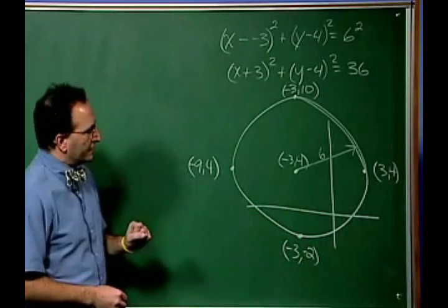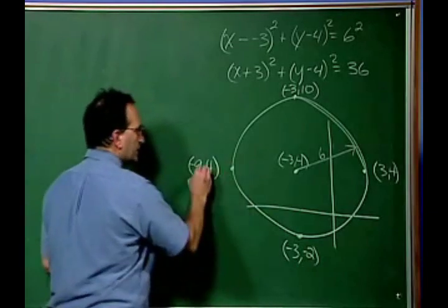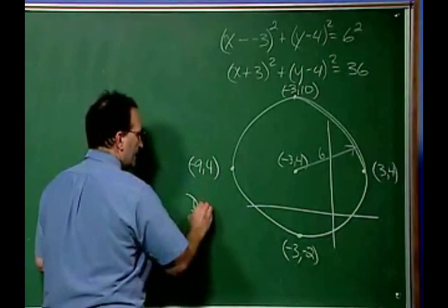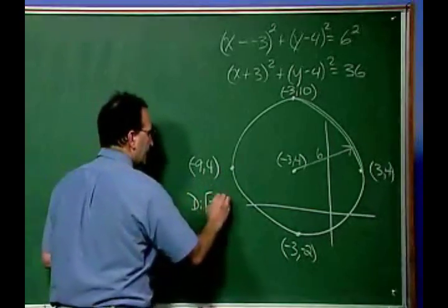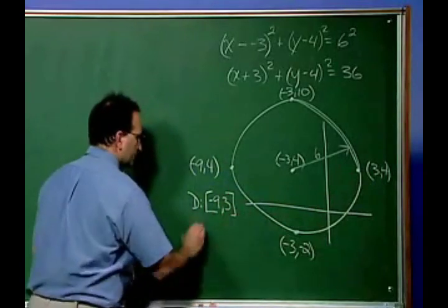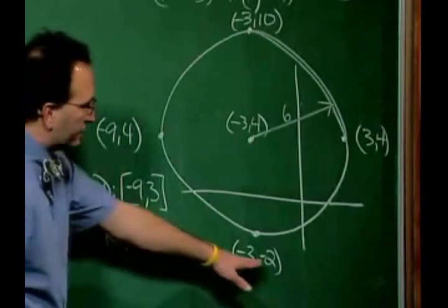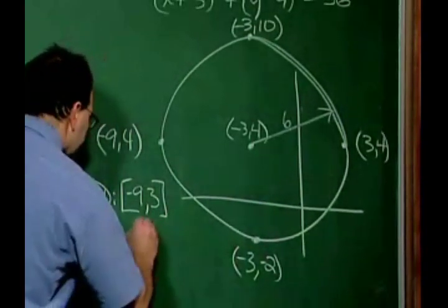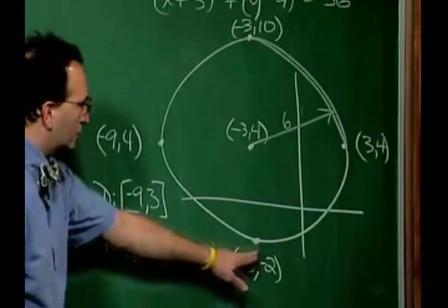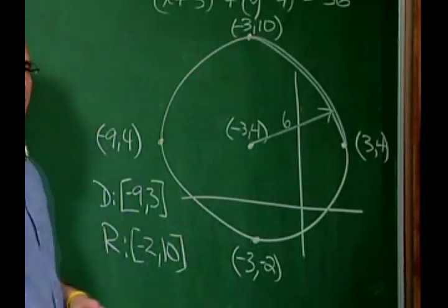The domain and range. Well the domain are the x values. And we can see that it starts here at -9, inclusive, and goes over to 3, inclusive. The range are the y values. And we can see it starts at -2, inclusive, and it goes up to positive 10, inclusive.